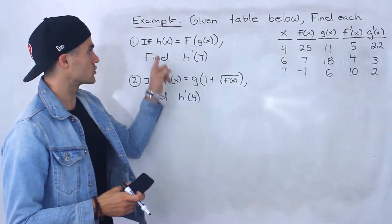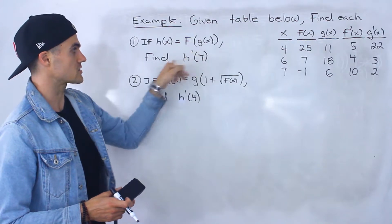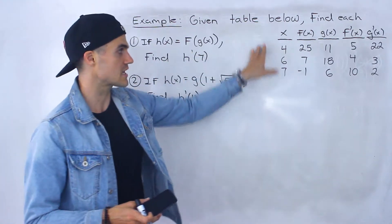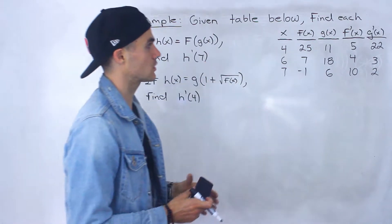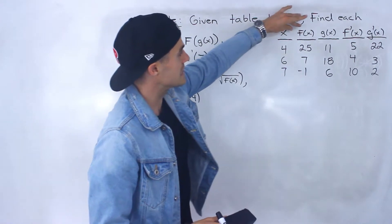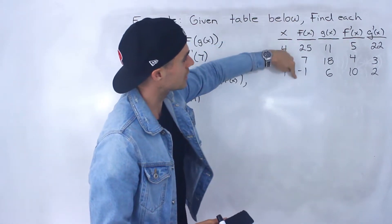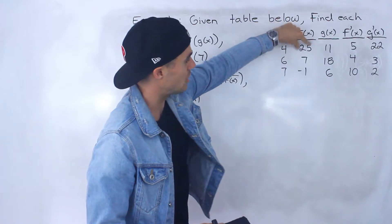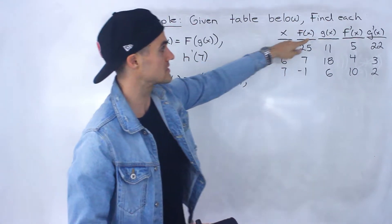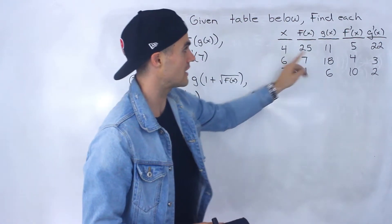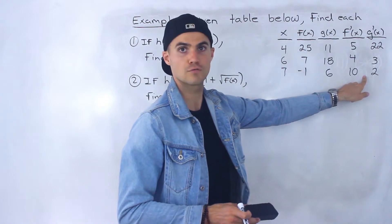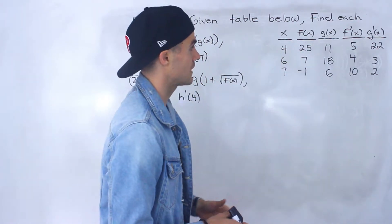So for number one, we're told if h of x equals f of g of x, we have to find h prime of 7, and we've got to use this table over here. Before getting into the question, I want to explain what this table means. These here are going to be the values of f of x in this column, at these specific x values. This column is the value of g of x, this one is f prime of x, and this one is g prime of x, all at these specific x values.